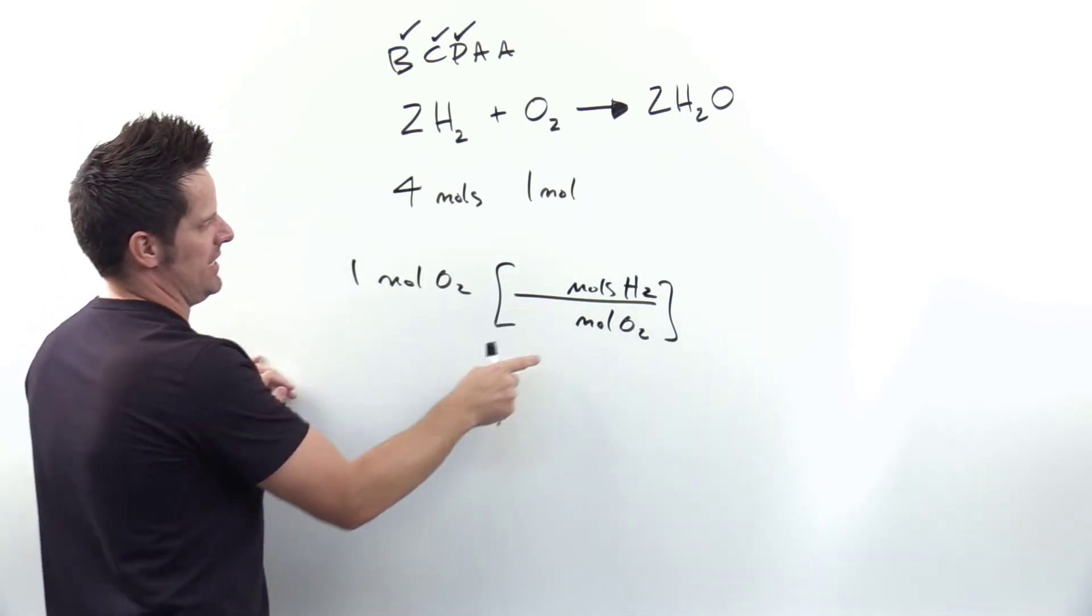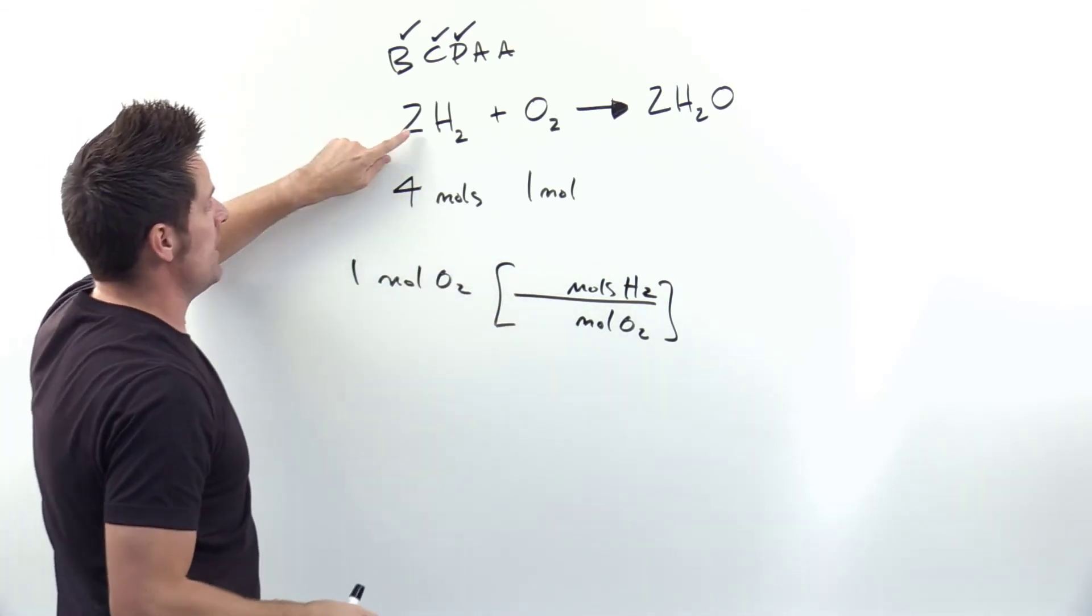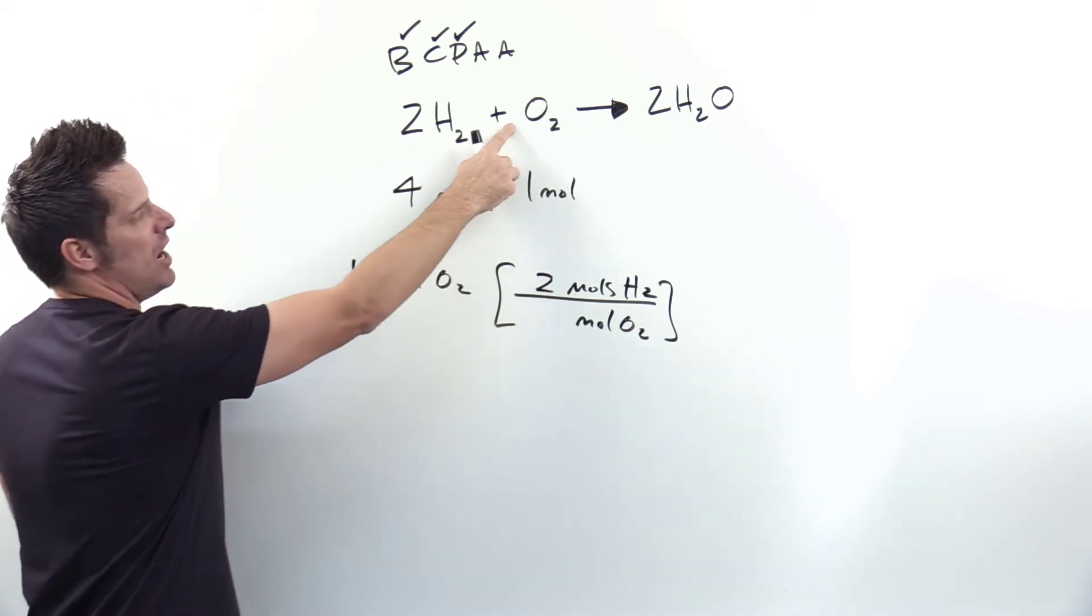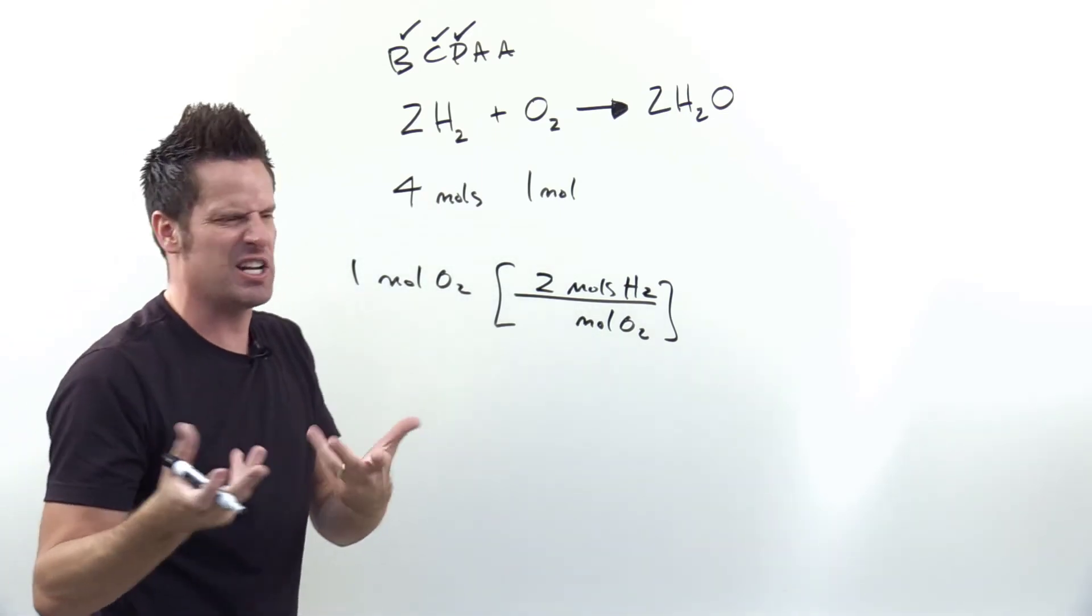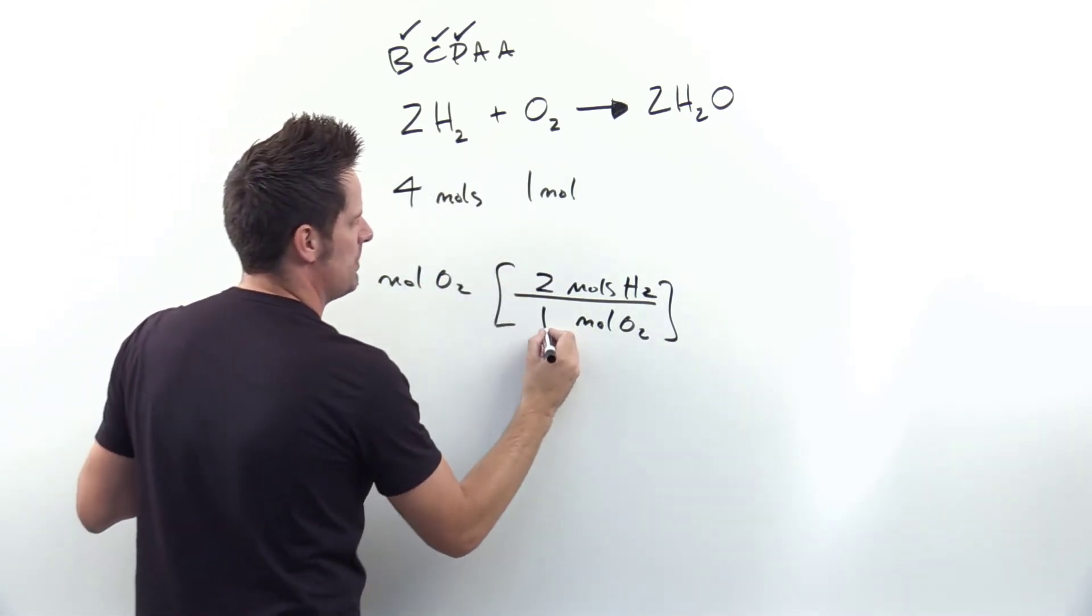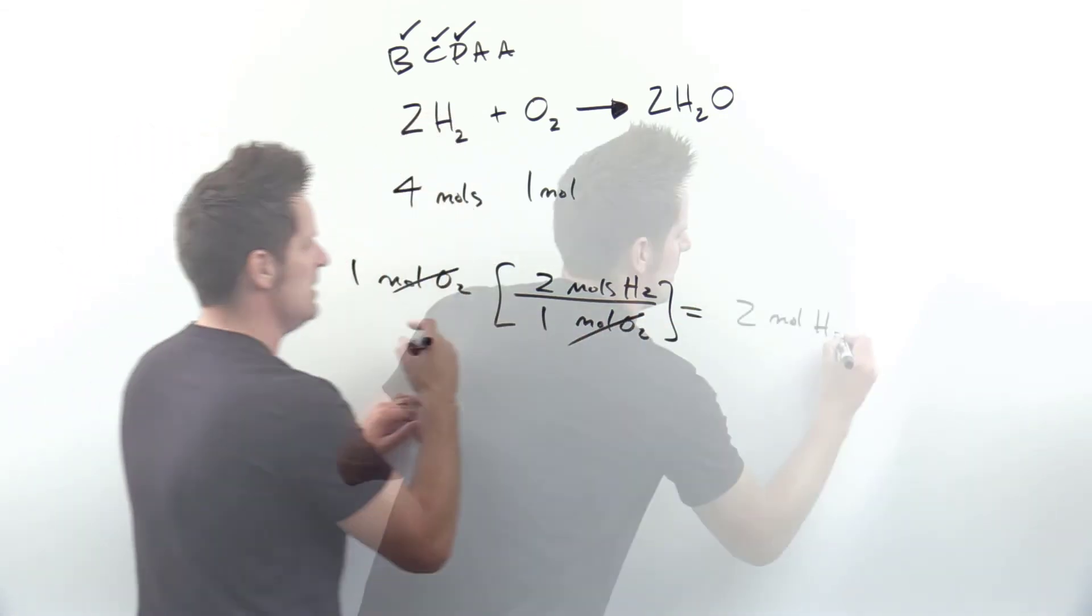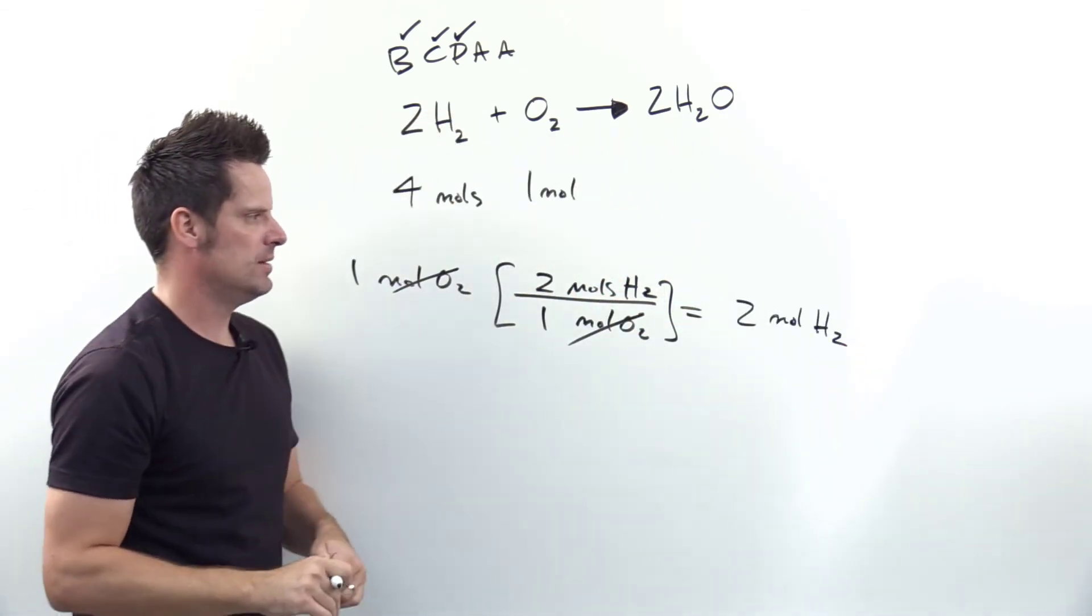Now what numbers go in here? The numbers are the coefficients here in the balanced equation. So I've got a 2 next to the hydrogen, and I've got a 1 not written but implied. Anytime you see no number it's an implied 1 next to the O2, so I'm gonna put 1 right there. So moles of O2, moles of O2, cancel each other out, and I'm left with 2 moles of H2.